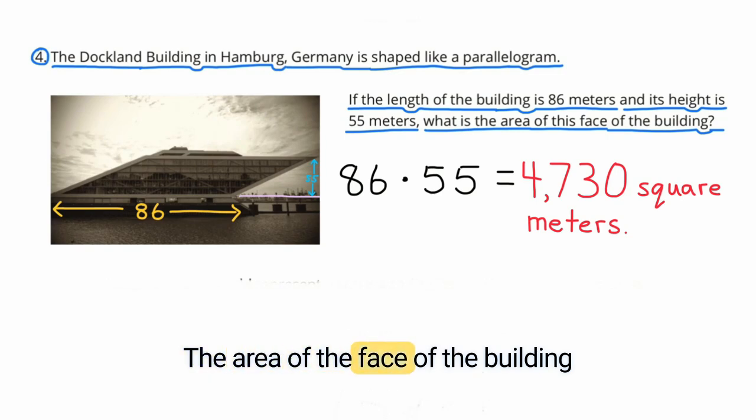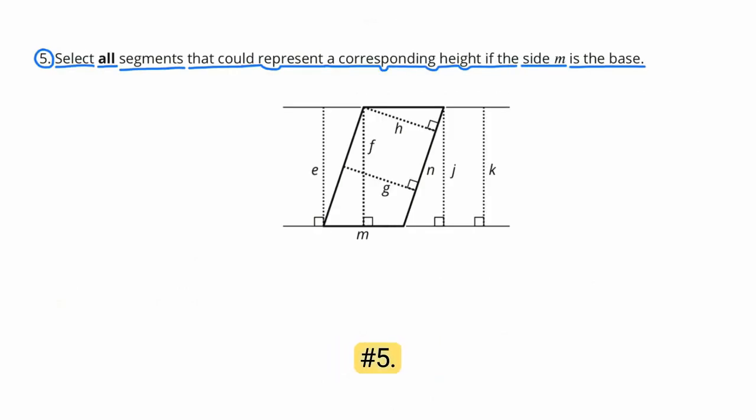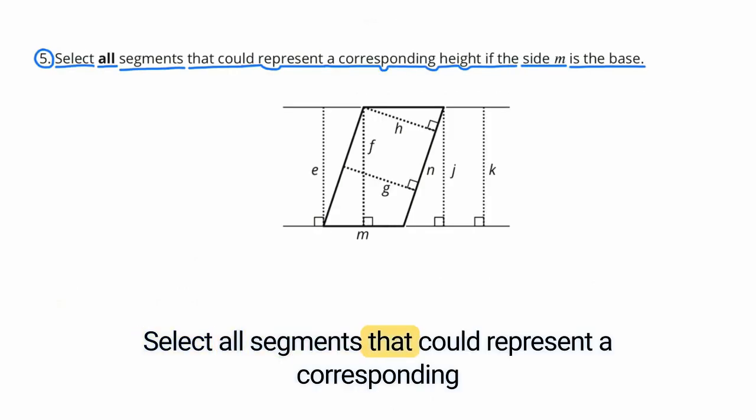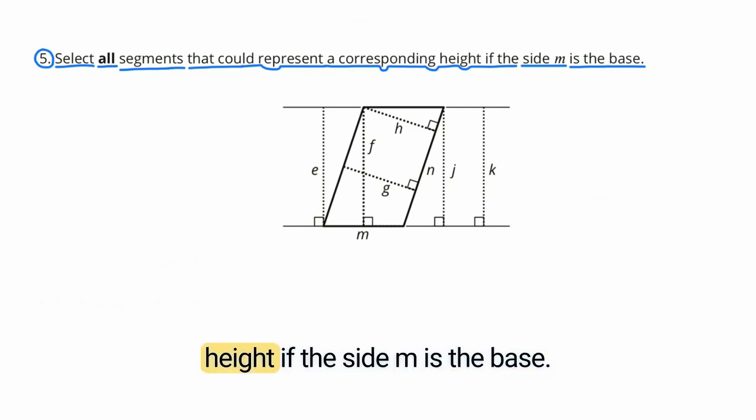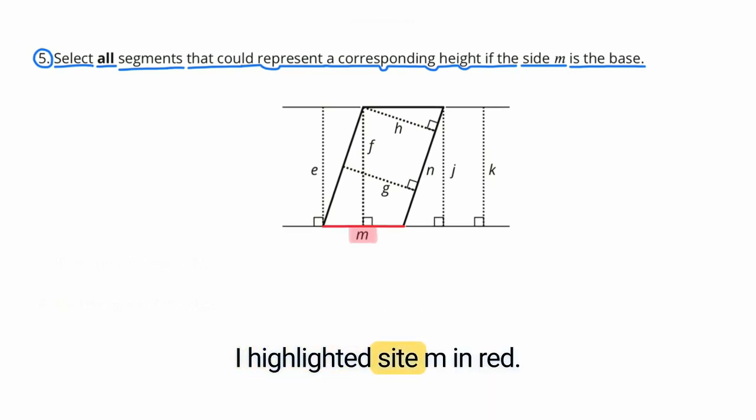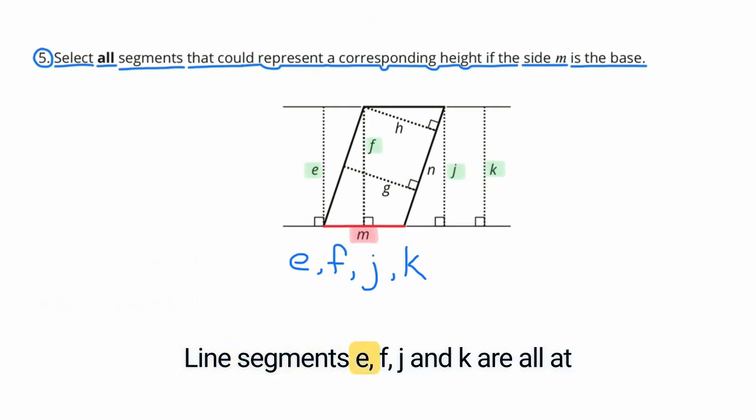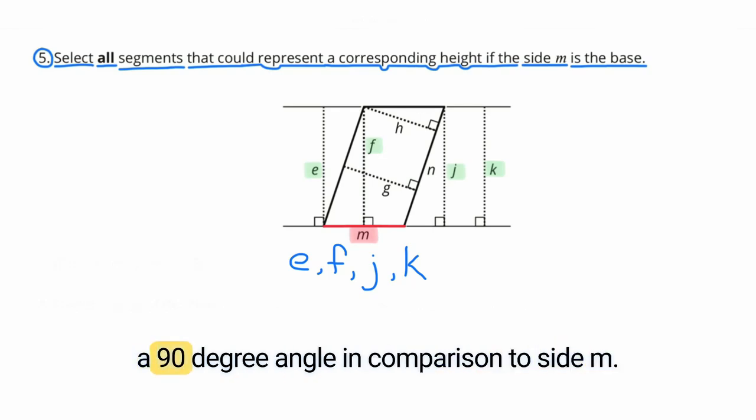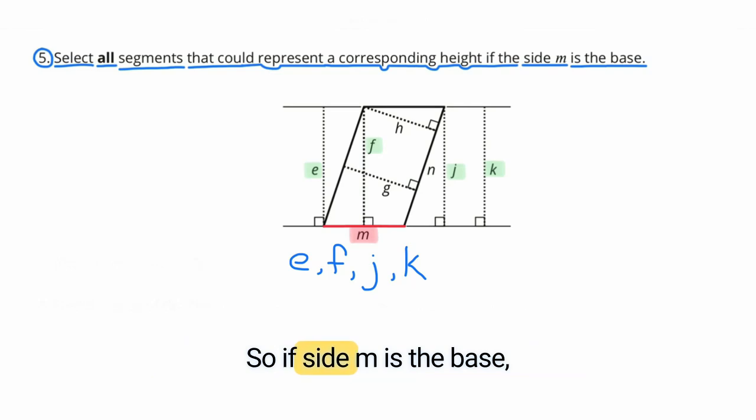Number 5. Select all segments that could represent a corresponding height, if the side M is the base. I highlighted side M in red. It represents the base. Line segments E, F, J, and K are all at a 90 degree angle in comparison to side M. So, if side M is the base, E, F, J, and K all represent the height.